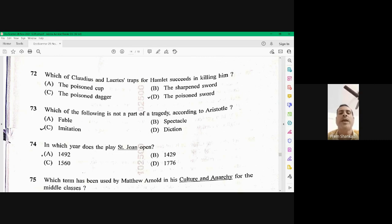Question number 74. In which year does the play St. John opens? The first act, first scene of St. John opens in 1429. 1429. B is the right option.